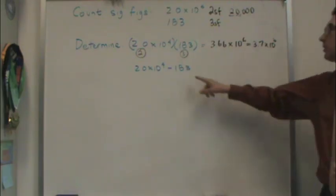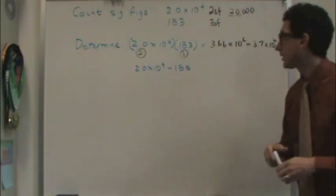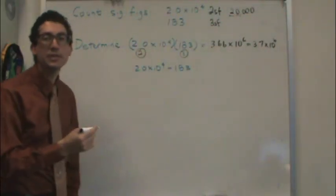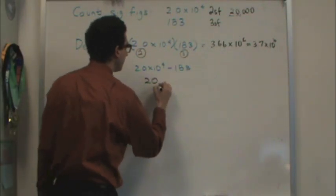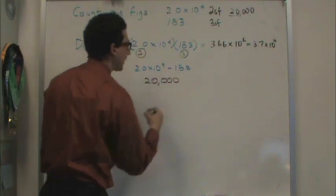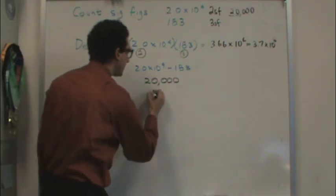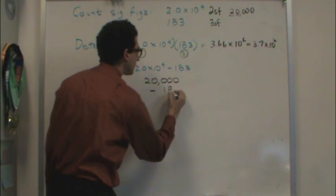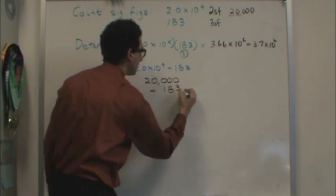The tricky one, really, for most students is this one. Let's try it. Here's how I do it, and there's different ways to do it. 20,000, I write it out, minus, and I line up the decimals, 183.